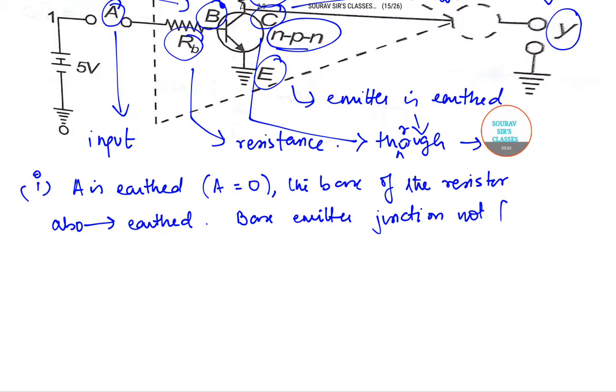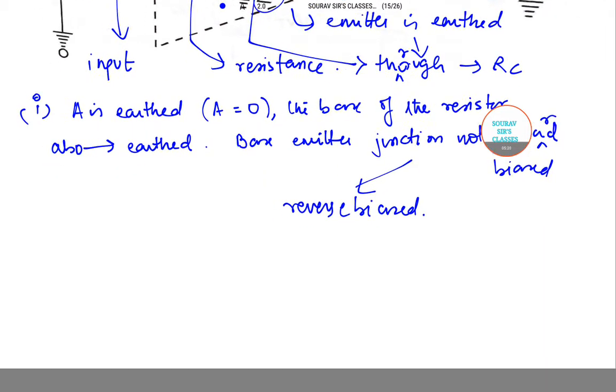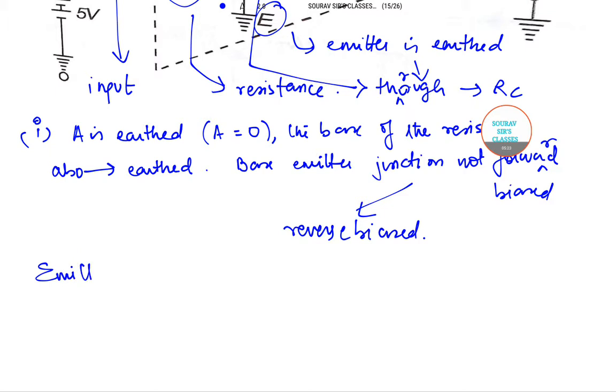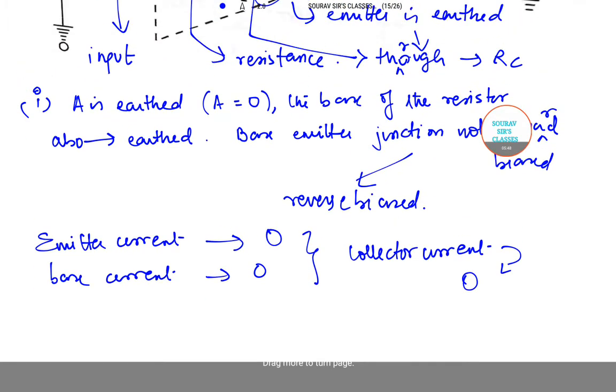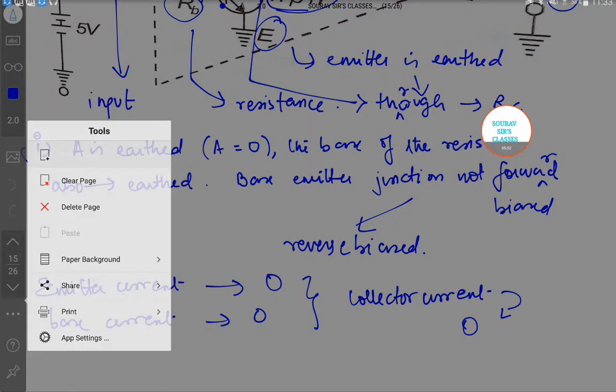If not forward biased, then base collector junction is reverse biased. As the emitter current is zero, then as a consequence of this, base current is also zero and hence the collector current will be also zero.